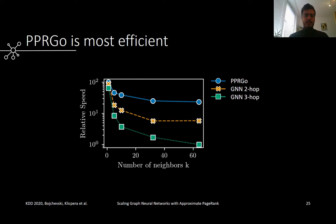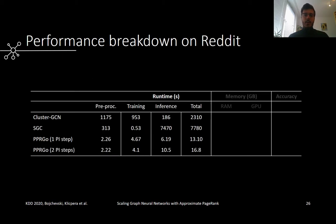All models achieve comparable accuracy. Besides evaluation in the distributed setting, we also evaluate the performance of PPR-GO on a single machine. Unlike previous works, which mostly report training time and almost never report inference time, we are interested in a complete breakdown. In particular, fast inference is often most important in practice and may even be subject to real-time constraints. We compare to two other recent scalable methods, SGC and ClusterGCN on the Reddit dataset. We see that the overall runtime of PPR-GO is significantly smaller at less than 17 seconds compared to over 2000 seconds for ClusterGCN and over 7000 seconds for SGC. While SGC is fast to train and has relatively low preprocessing time, it is painfully slow during inference. ClusterGCN, on the other hand, shows fast inference but slow preprocessing time. PPR-GO is faster for each step and faster overall.